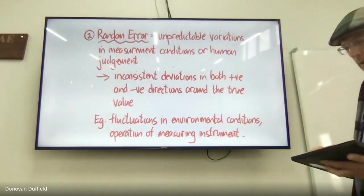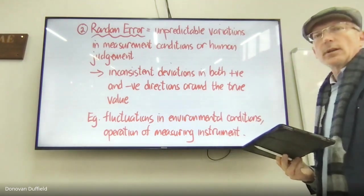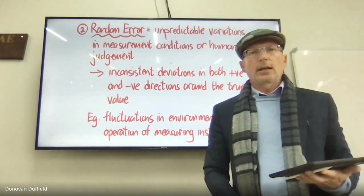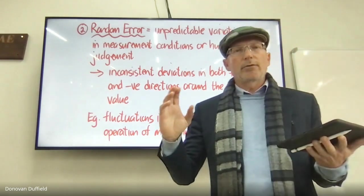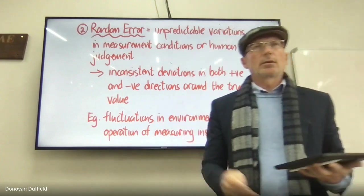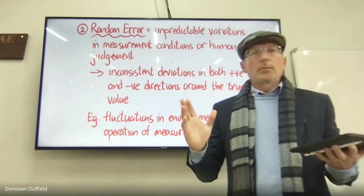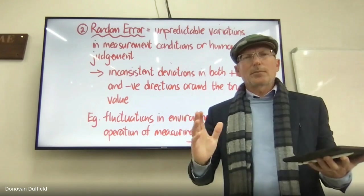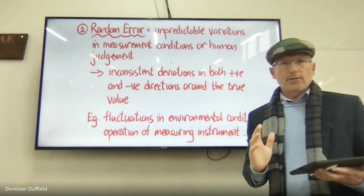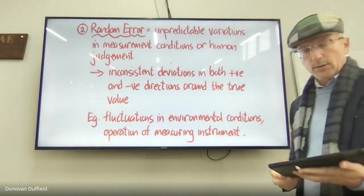Random errors are unpredictable variations in measurement due to changing conditions or human judgment. They lead to inconsistent deviations in both positive and negative directions. For example, measuring a metal strip's length on days of different temperatures — 15°C, 20°C, 5°C — without accounting for thermal expansion produces random errors. Fluctuations in environmental conditions and instrument operation are random errors.